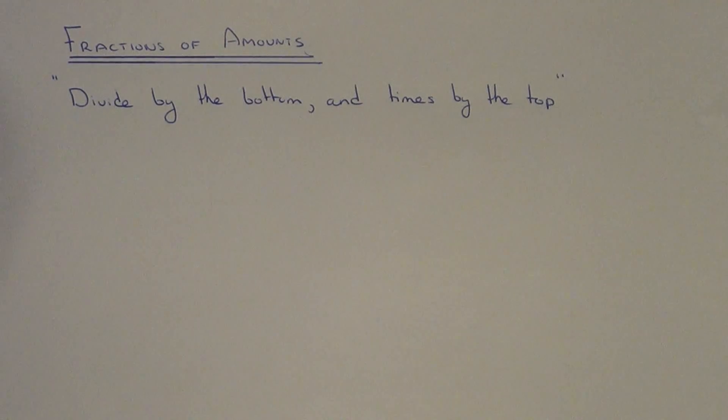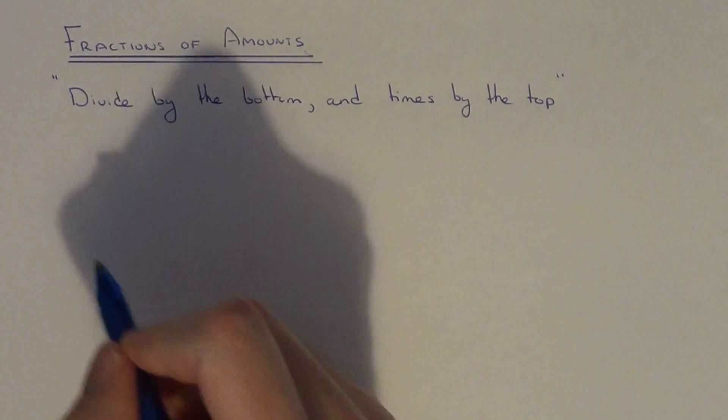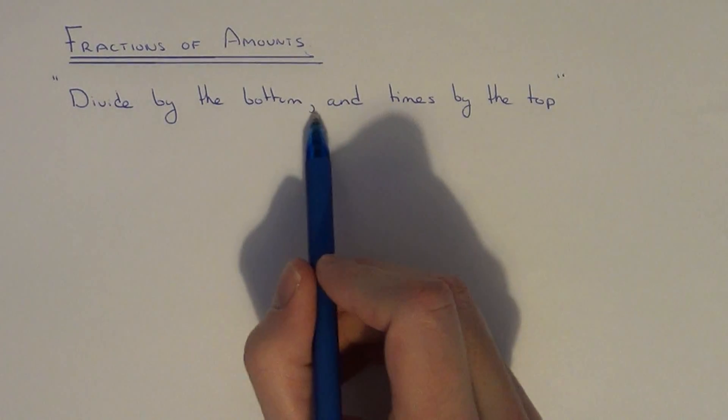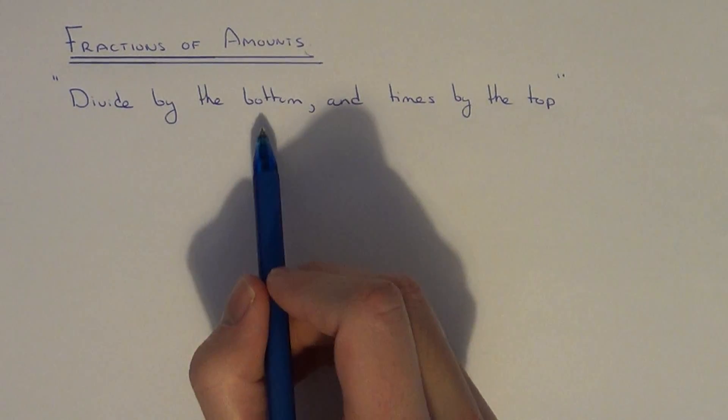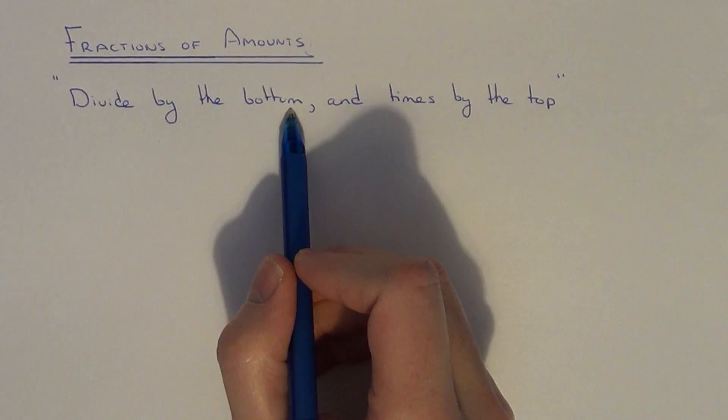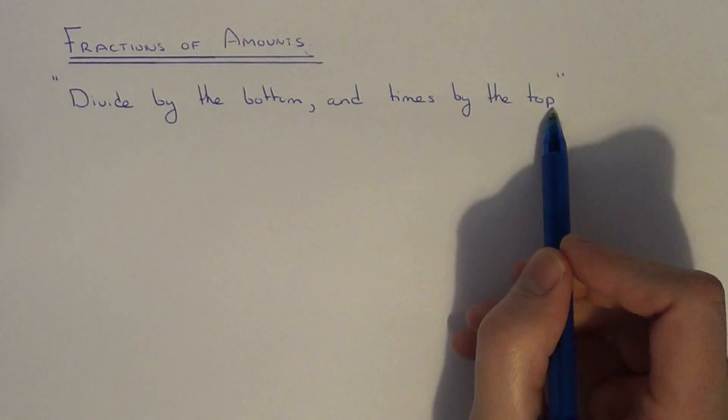Today I'm going to show you how to work out a fraction of an amount. You can do this by using the rule divide by the bottom and times by the top. So all you need to do is divide the amount by the denominator and then multiply this answer by the numerator.